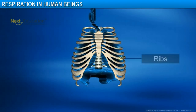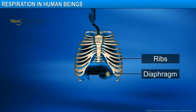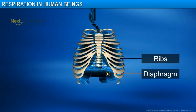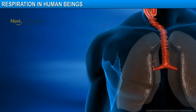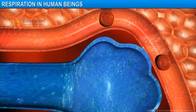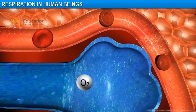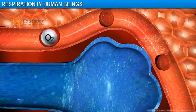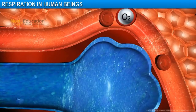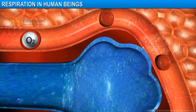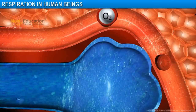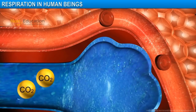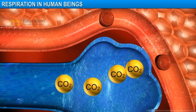When we breathe in, we lift our ribs and flatten our diaphragm. As a result, the chest cavity becomes larger. Air gets sucked into the lungs and fills the expanded alveoli. The oxygen in the alveolar air is taken in by the red blood cells in the alveolar blood vessels. The oxygen in the red blood cells is then transported to all the cells in the body. The cells in turn release carbon dioxide, which diffuses into the blood and is then released into the alveoli.